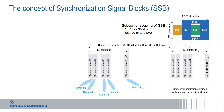As you can see here in the standard, the concept of synchronization signal blocks was introduced. The synchronization signal block itself occupies four OFDM symbols in the time domain and 240 sub-carriers, or 20 resource blocks, in the frequency domain. With the PSS and SSS we determine the cell ID, and with the physical broadcast channel we can transmit the master information block, which contains important network and system parameters that the mobile needs to further connect to the network.